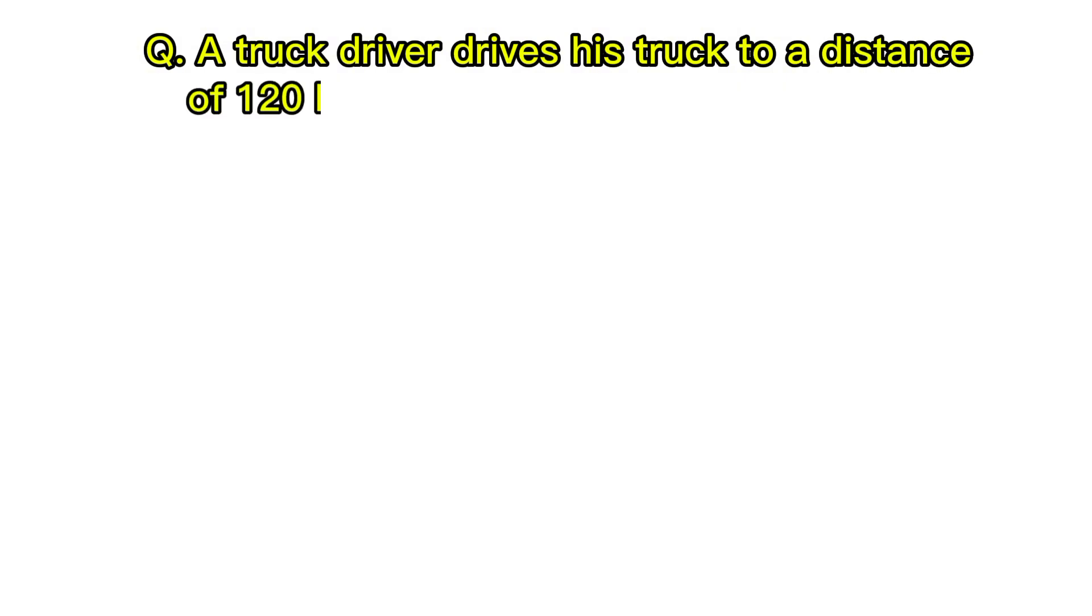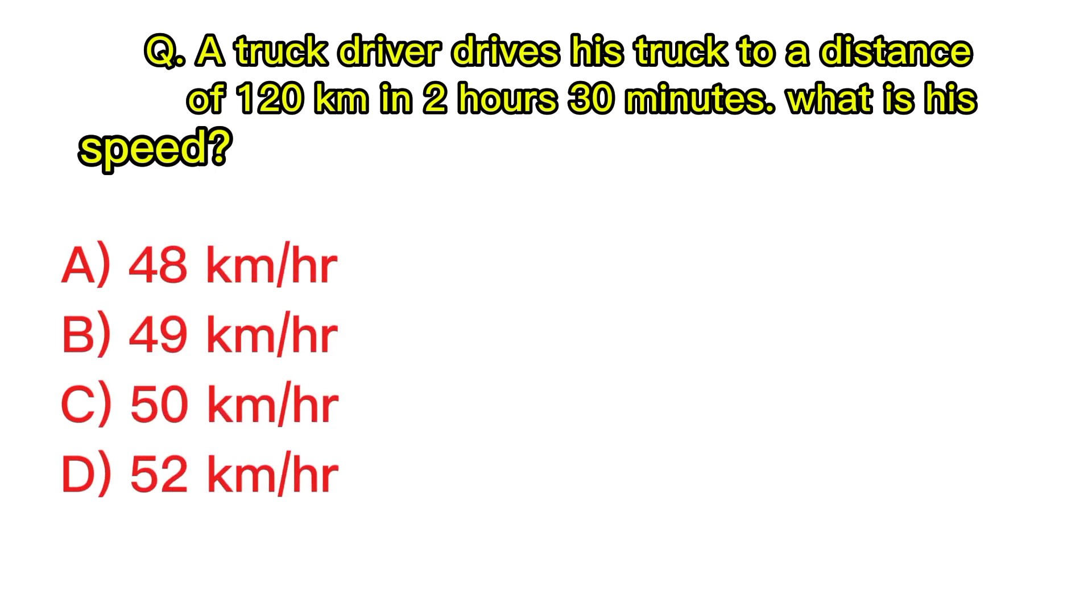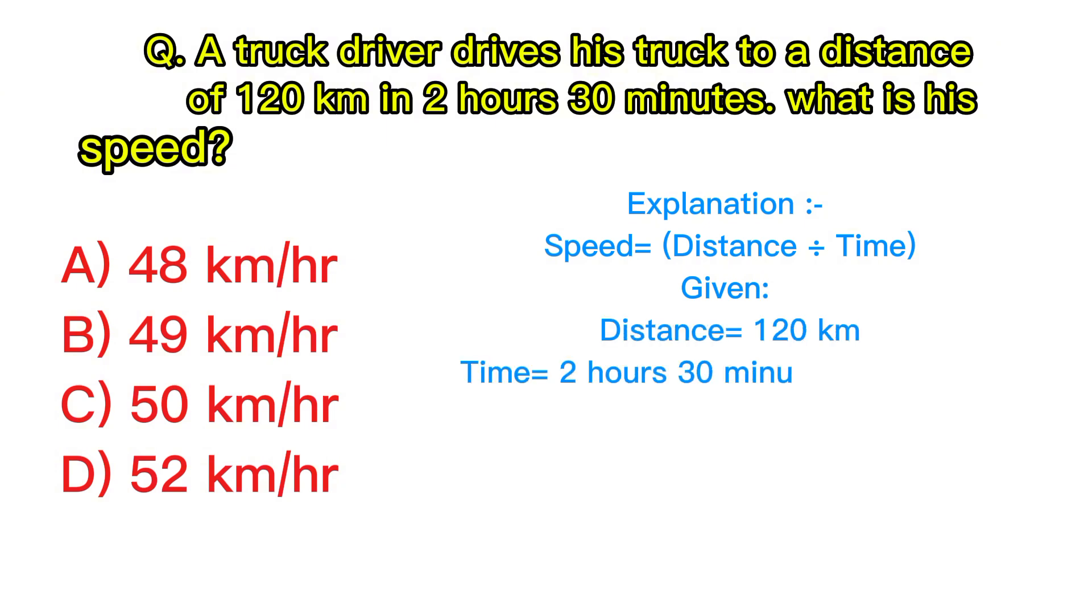A truck driver drives his truck to a distance of 120 kilometers in 2 hours 30 minutes. What is his speed? Explanation: Speed equals distance divided by time. Given distance equals 120 kilometers, time equals 2.5 hours. Applying the formula: speed equals 120 divided by 2.5, equals 48 kilometers per hour. Answer: A, 48 kilometers per hour.